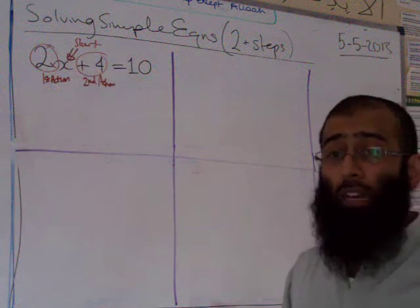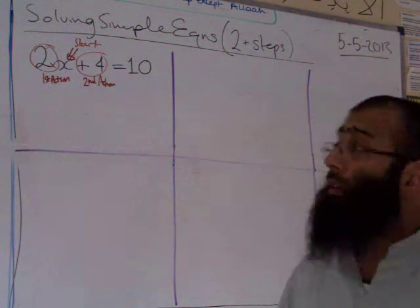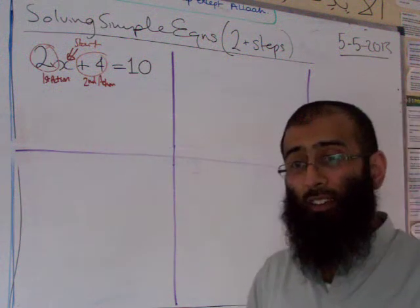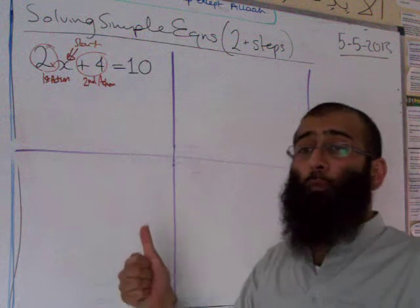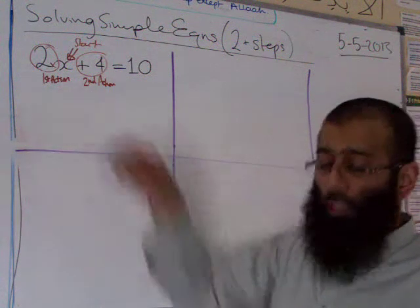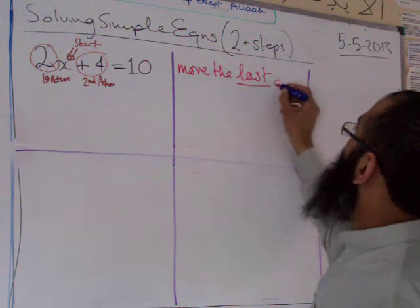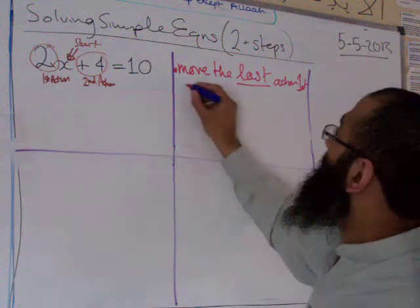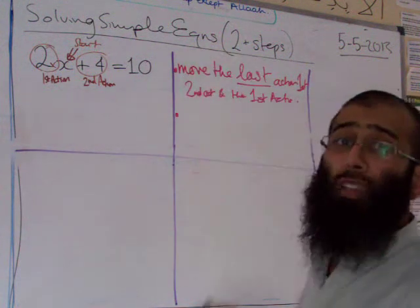Now that we've got two actions to move, we need to know which one to move first. Do we move the first action first or the second action first? We always move in reverse order. Times by two was done first, then adding four. The last thing done was add four, so we move the last action first.